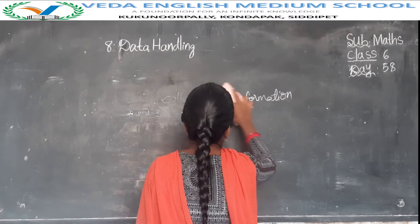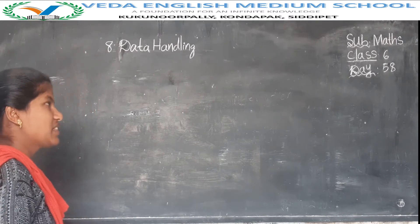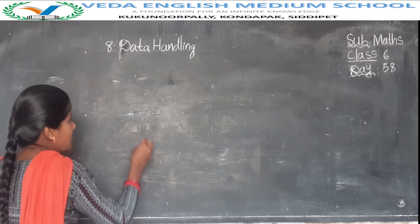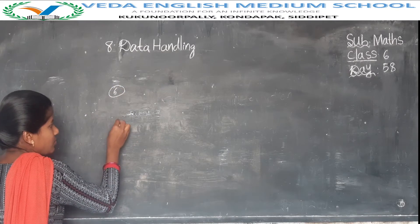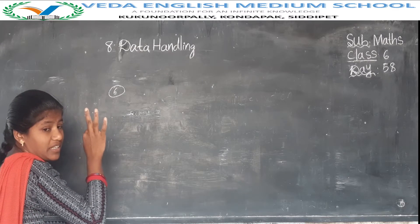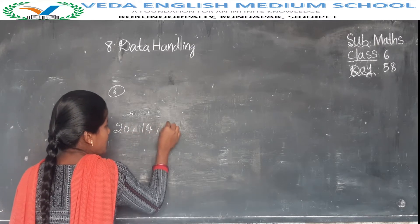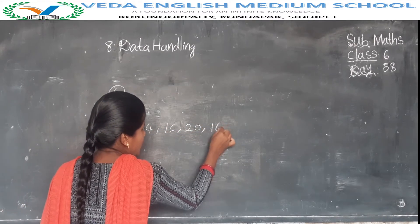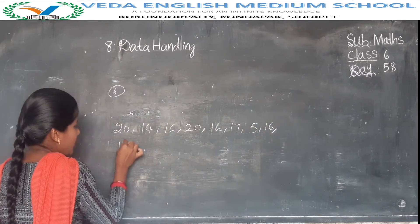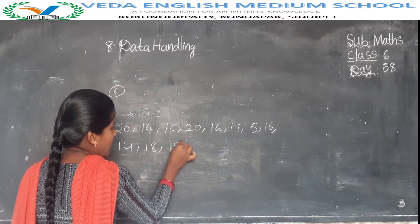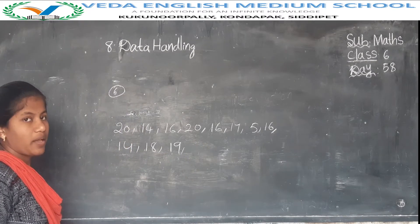Now I will take an example and explain. Either the information is in words or numerical numbers. For example, you have class 6. In different subjects you got marks like: 20, 14, 16, 20, 16, 17, 5, 16, 14, 18, 1, 19, 5. Now this is data — it is data about class marks, the marks you got in the subject of maths.